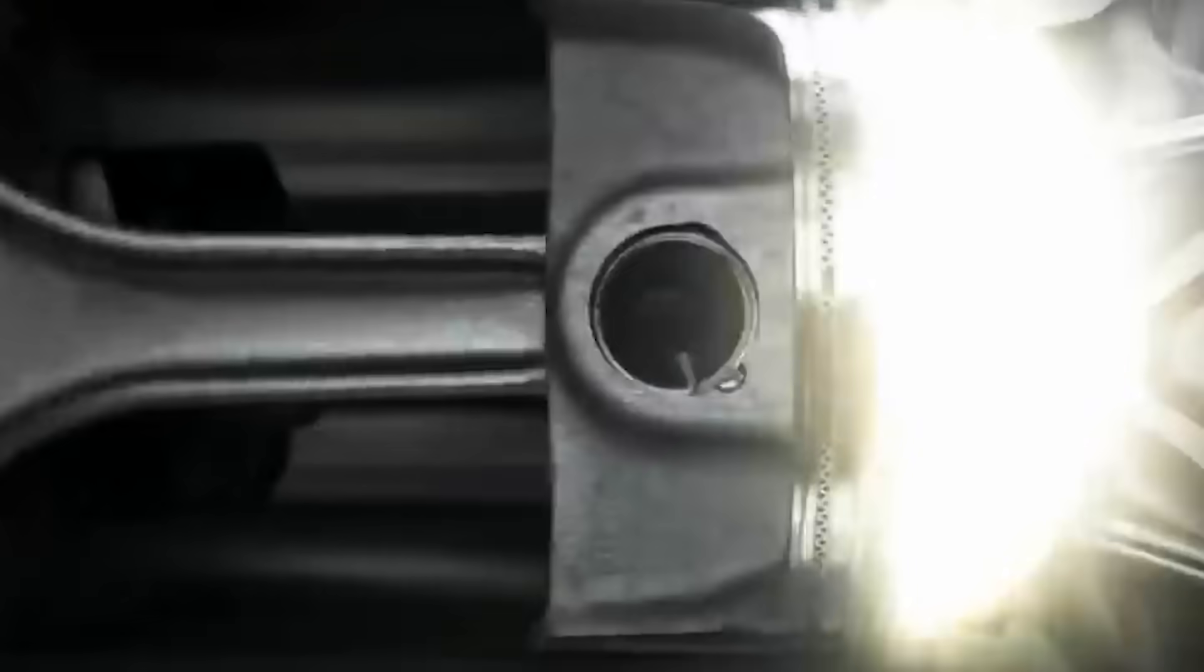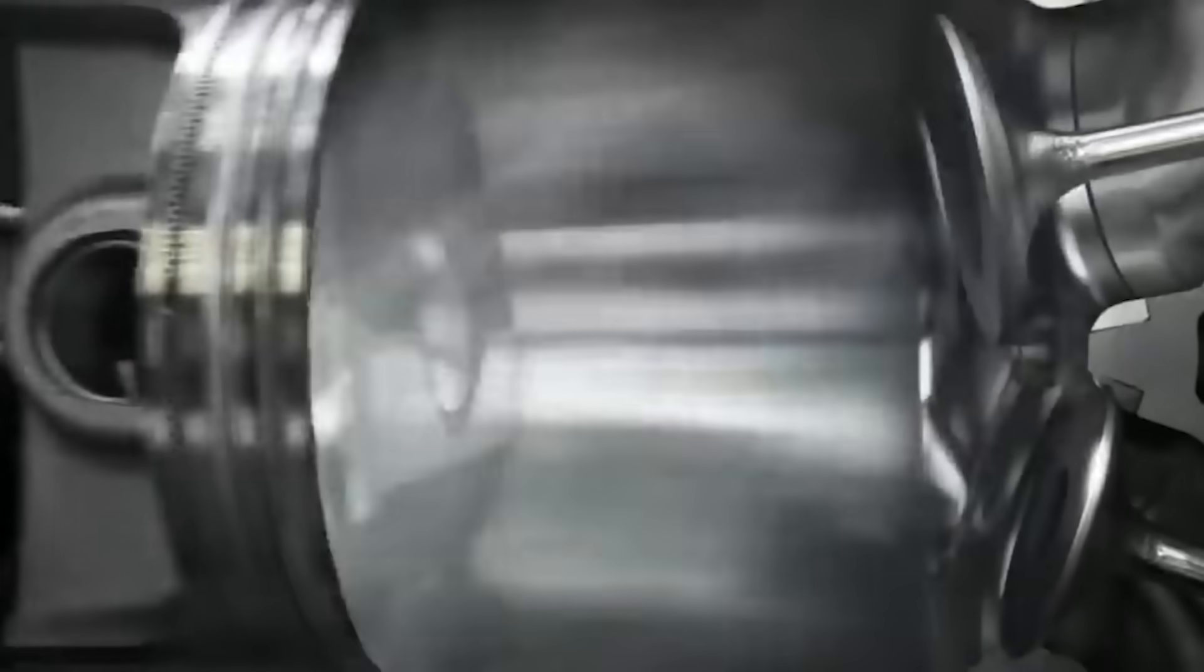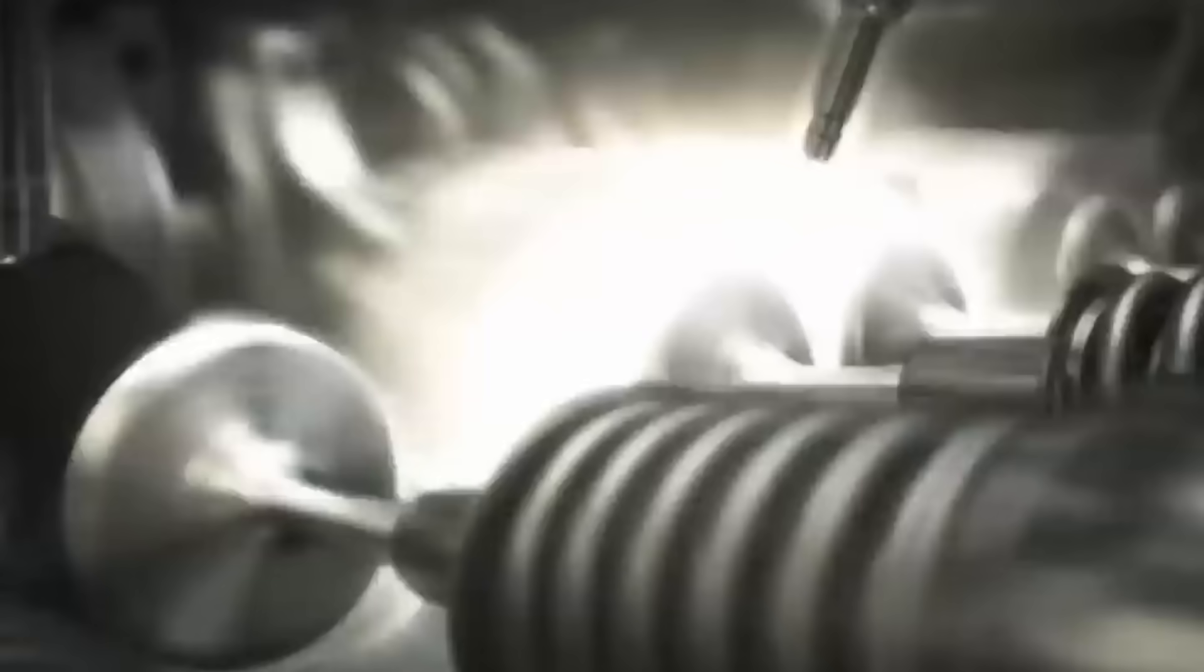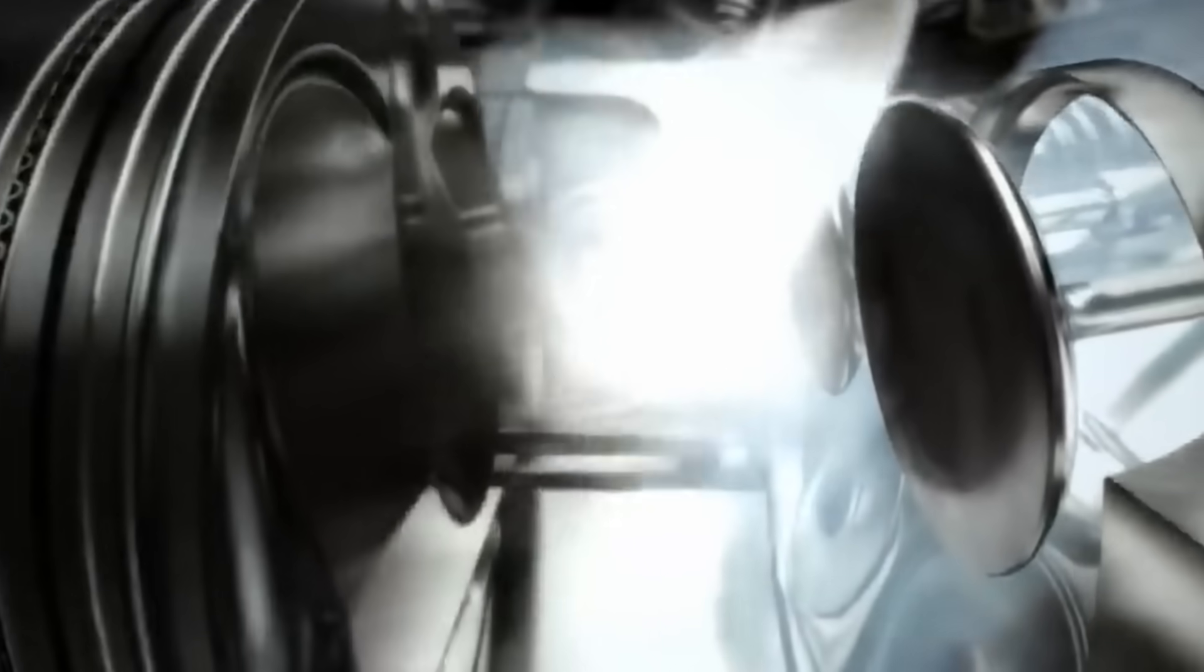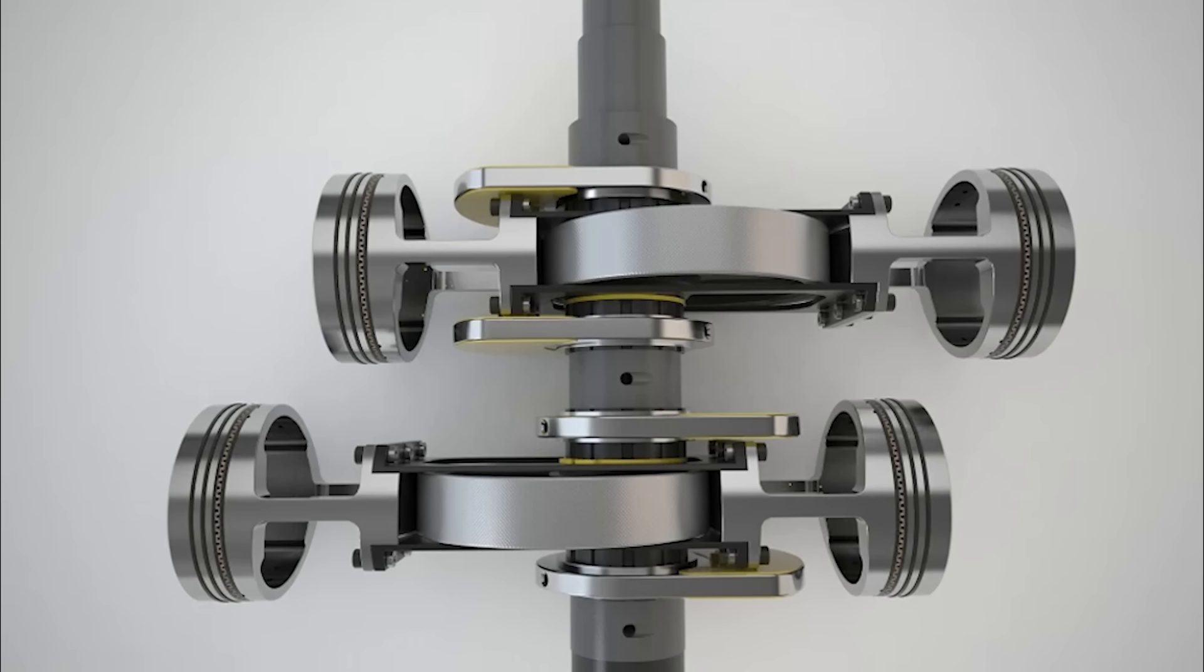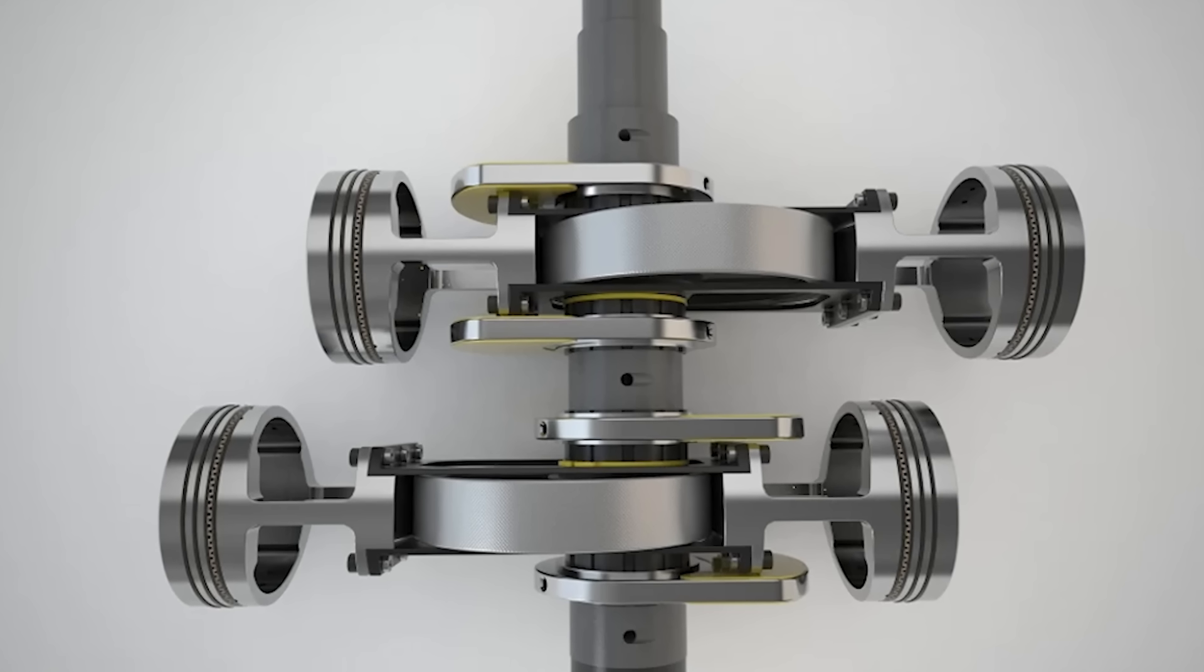More moving parts also mean more weight, complexity and potential failure points. The crankshaft itself is heavy and requires precise balancing, and the connecting rods are under immense stress, often limiting engine speed and efficiency. So how do you solve this? Well, with Gary Wasey's eccentric disc engine.